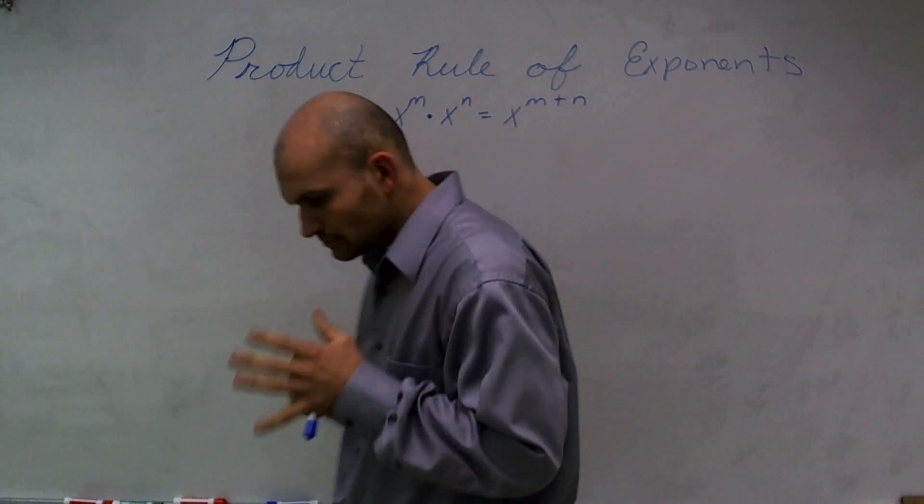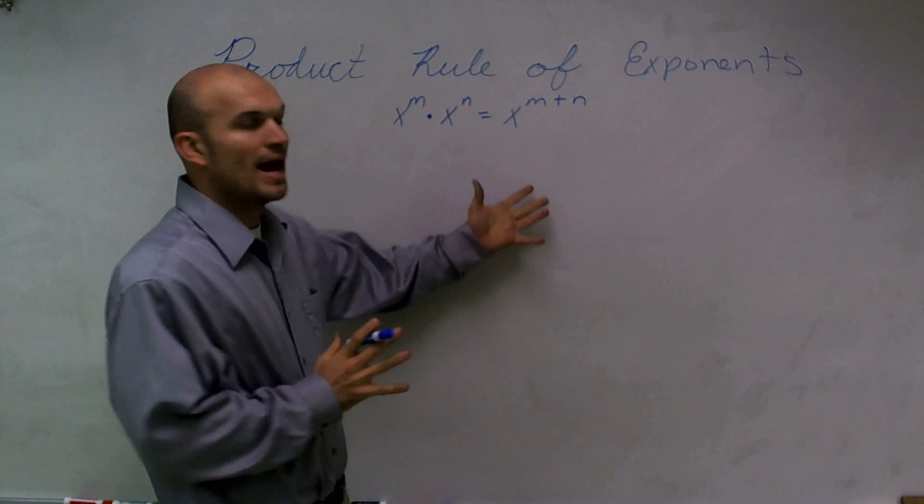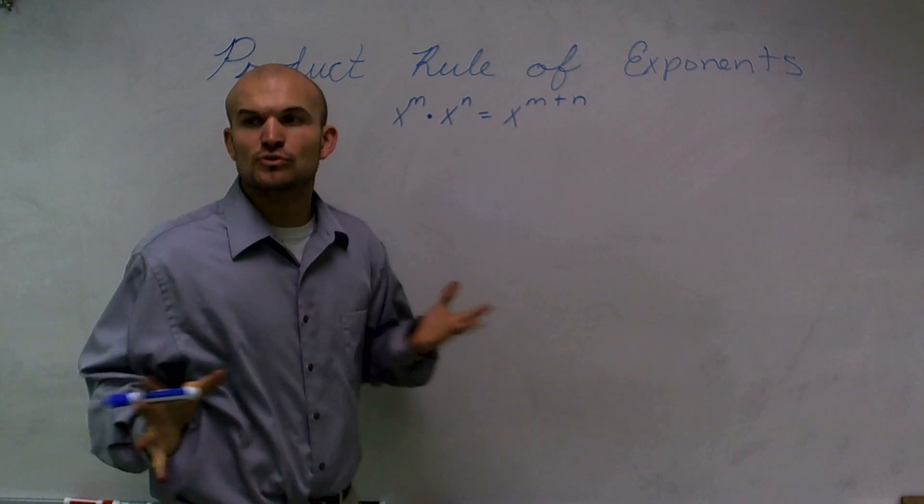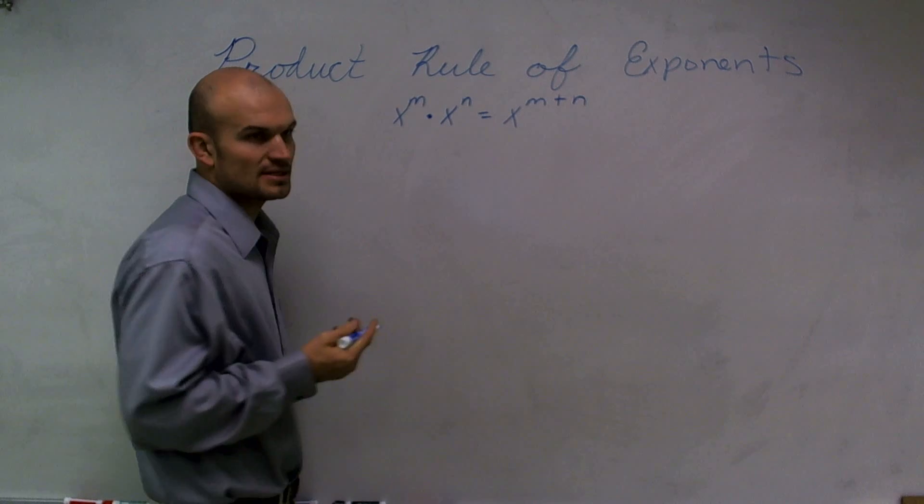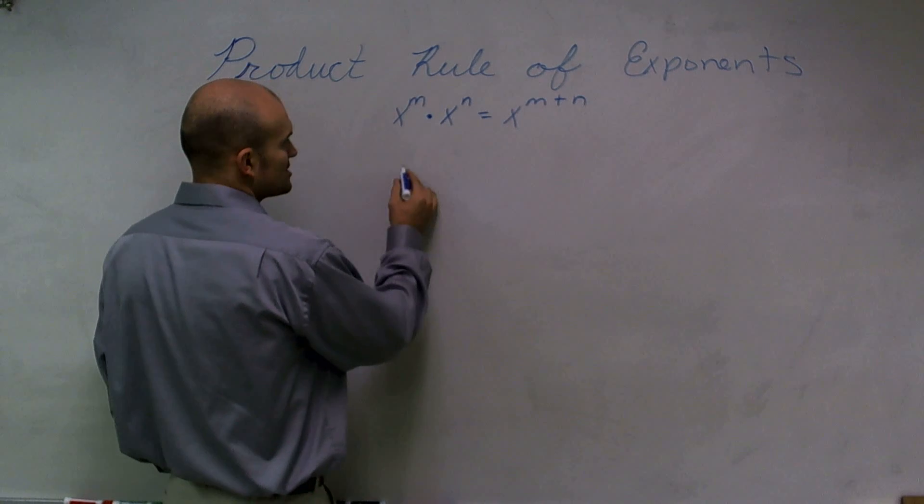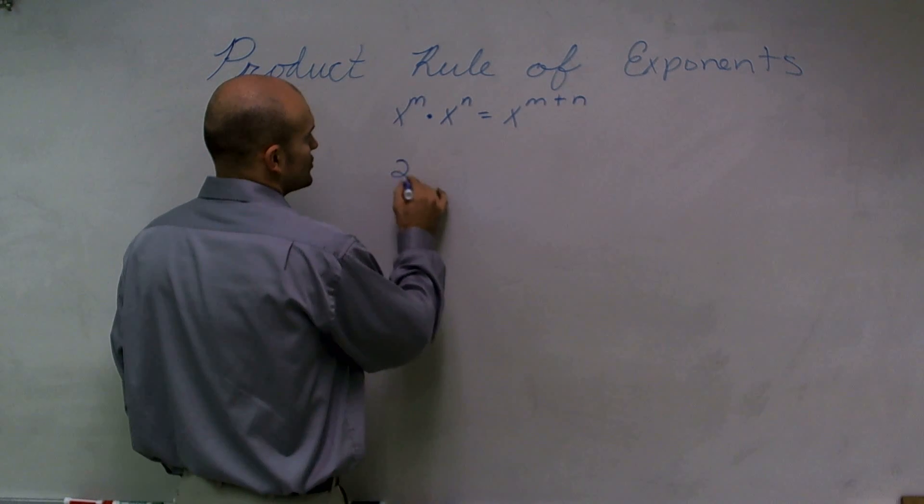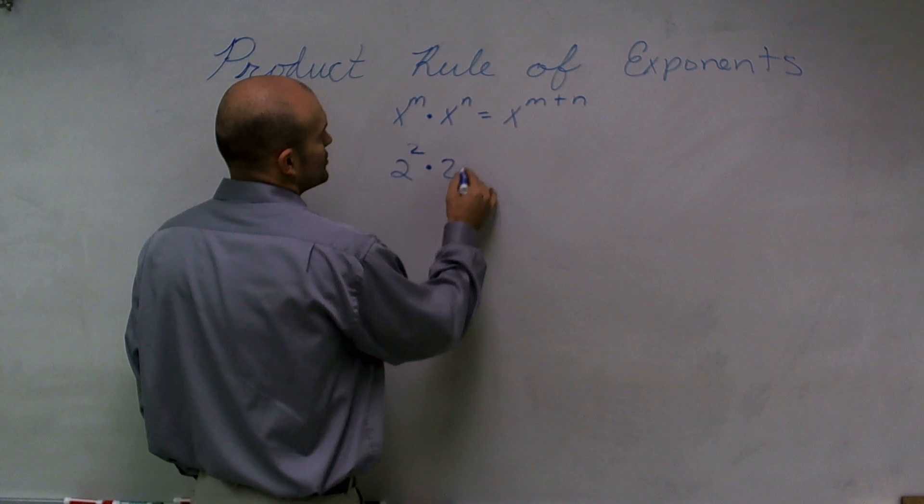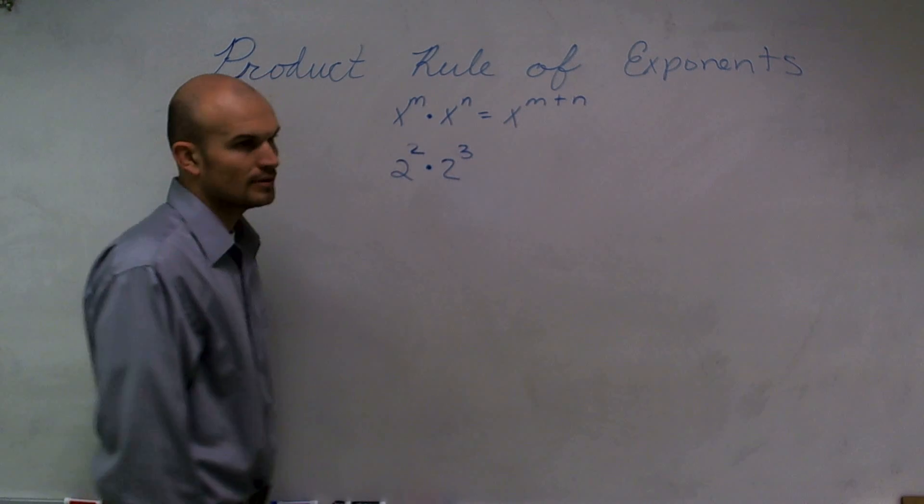So let's go ahead and take a look at it. Let's see why this is going to be true before we actually move on to any examples. Let's just pick some easy problems here. Let's pick, let's say I said 2 squared times 2 cubed.